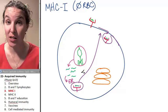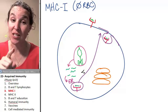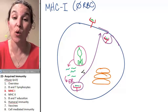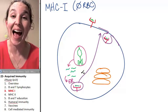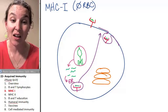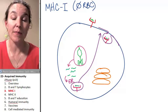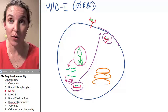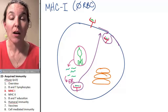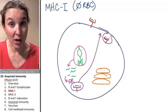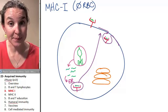Now, MHC-2. Not everybody has MHC-2, and MHC-2 is required to activate our acquired immune response.